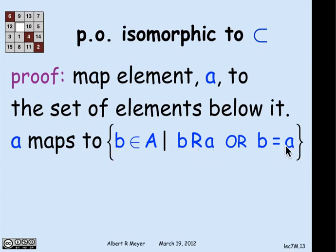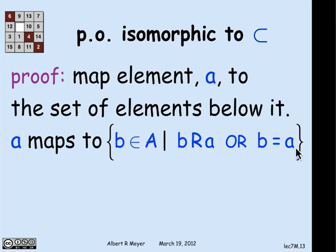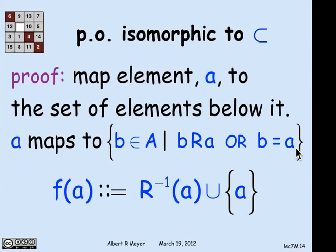And that is added for a technical condition. Remember, r is strict, so a is not related to a under r. But I want it to be in the set that a maps to, so I'm throwing that in. Another way to say this is that the mapping f of a is equal to r inverse of a union a.